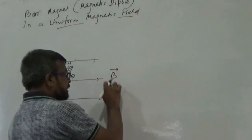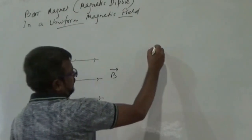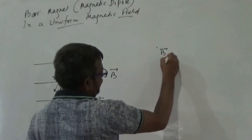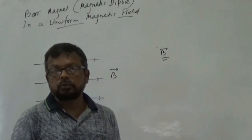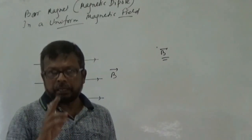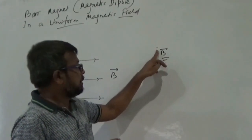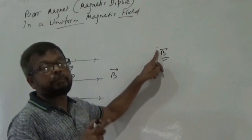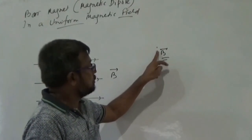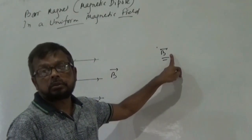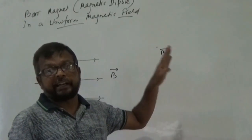This field strength B means: if you have a magnetic field strength B, what do you mean by that? It means that if we place here a north pole of unit pole strength, then it will experience a force of B. This is the definition of magnetic field strength.